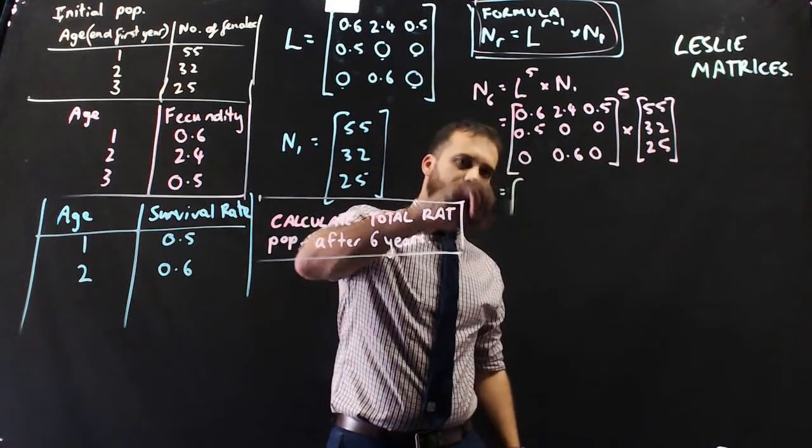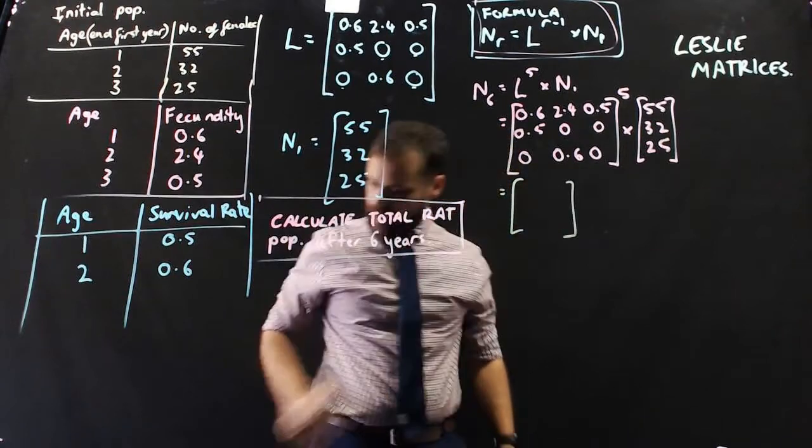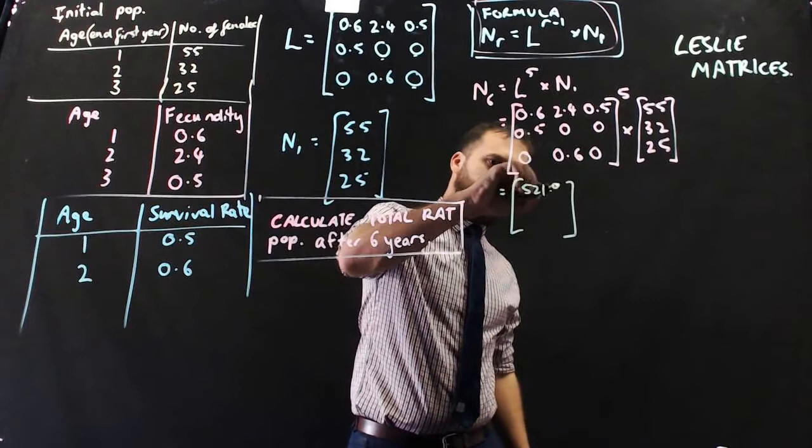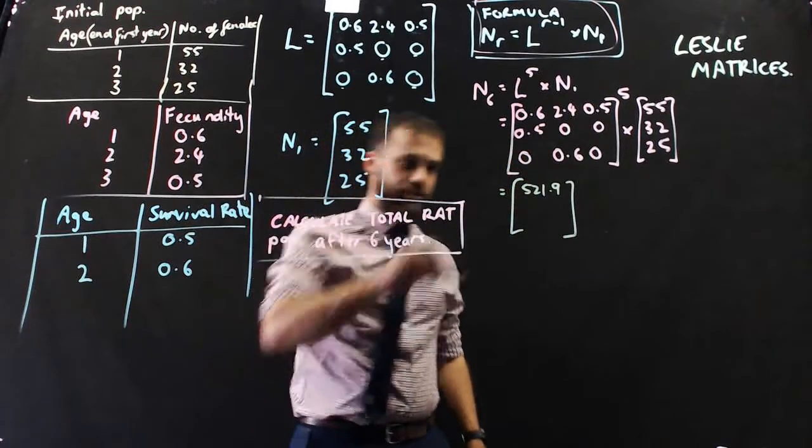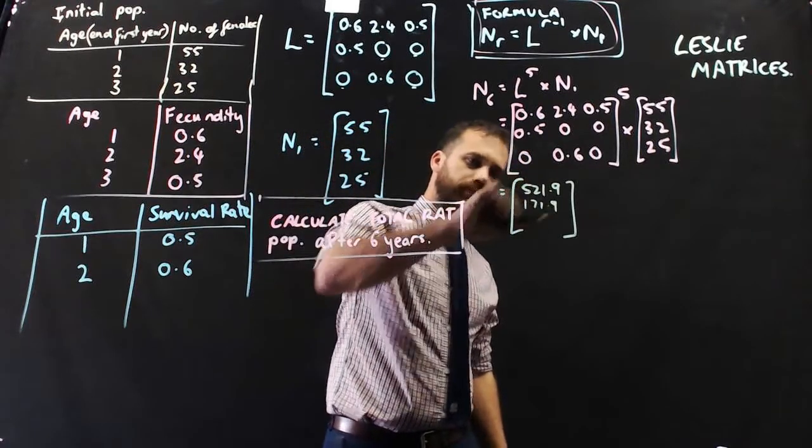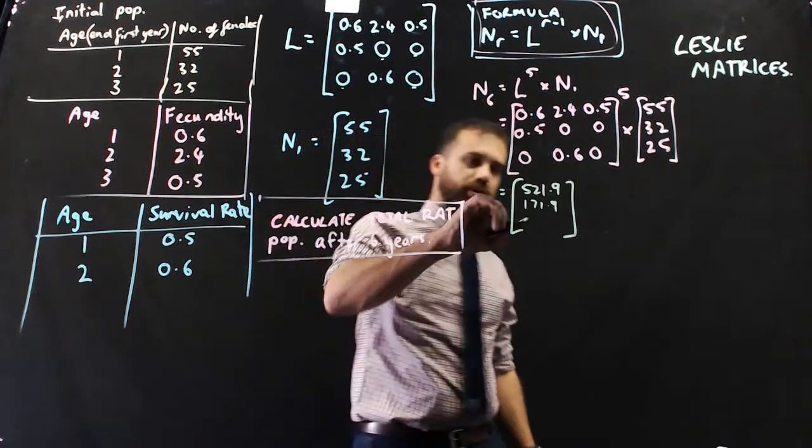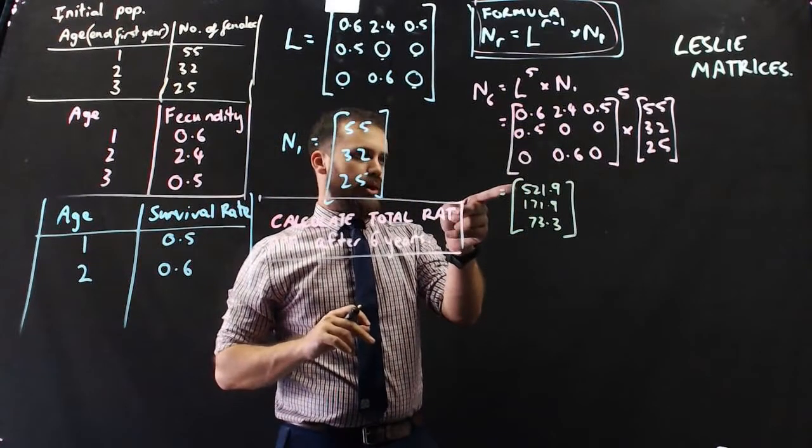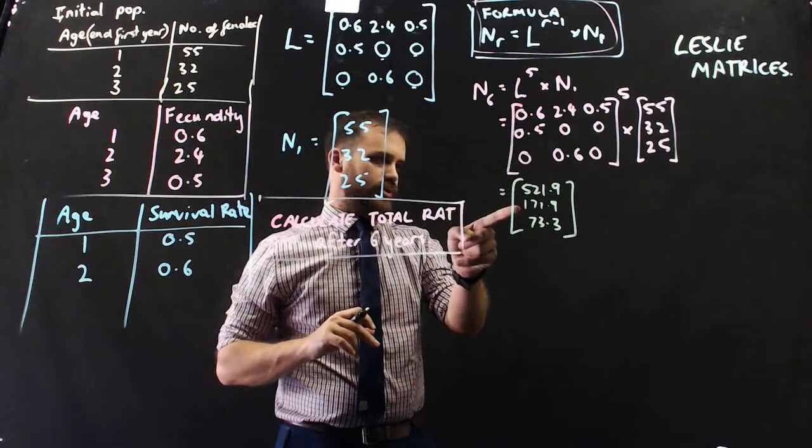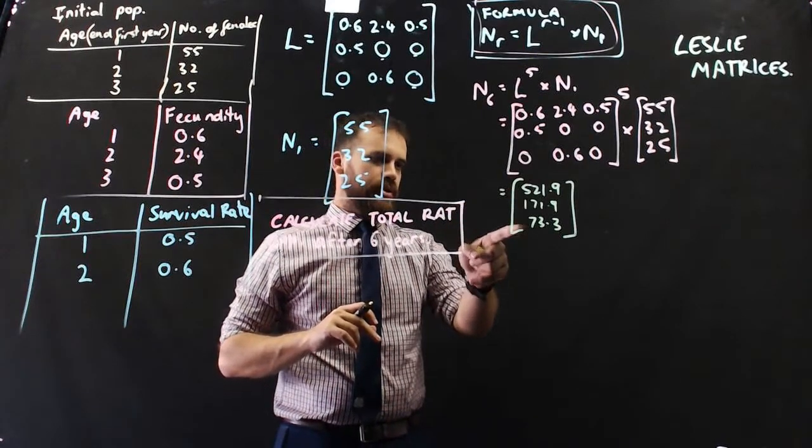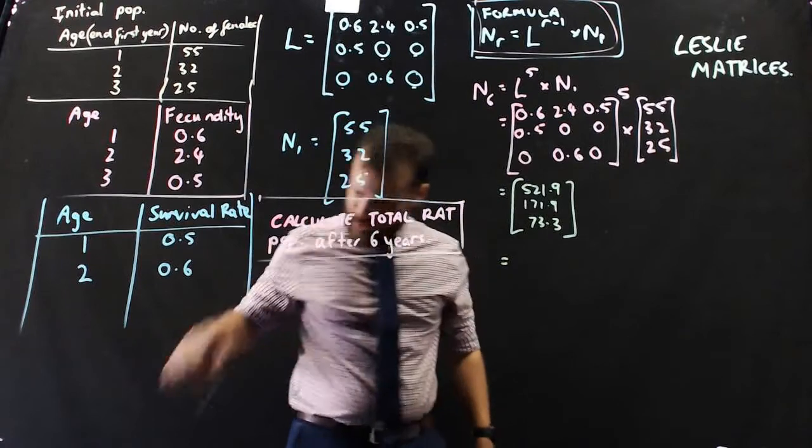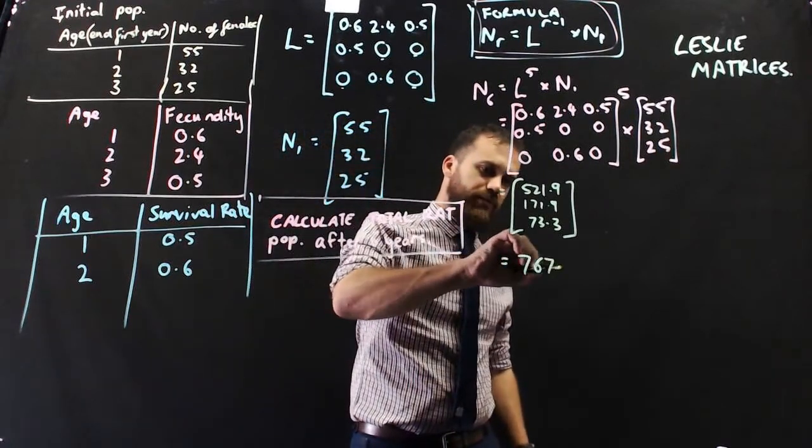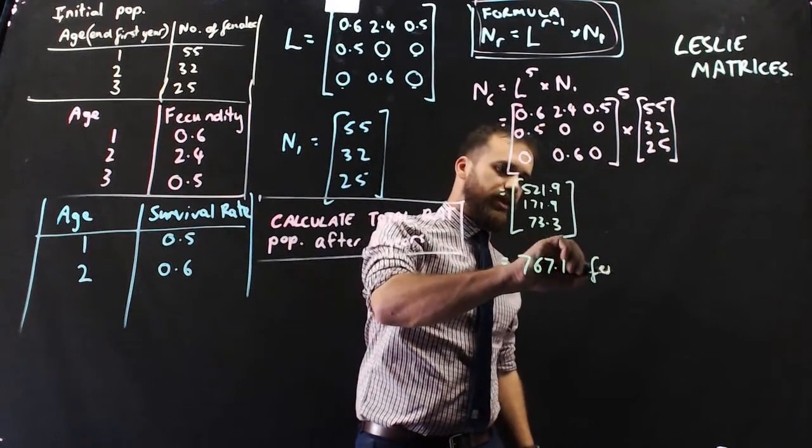n6 equals the Leslie matrix to the power of 5 times the initial population. Now just do the matrix multiplication here, and you'll get three numbers: 521.9, 171.9, and 73.3. That's the number of one-year-olds, two-year-olds, and three-year-olds.